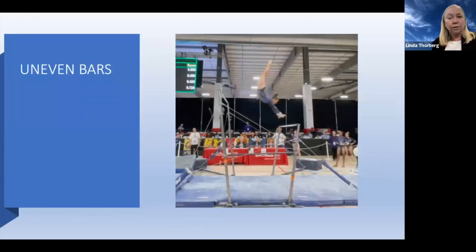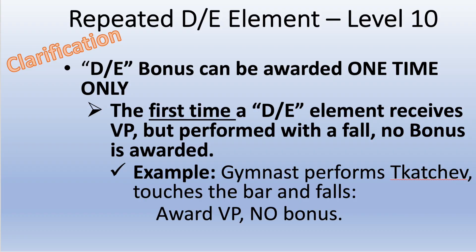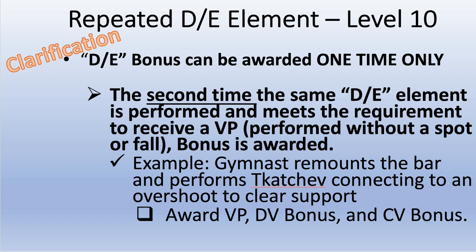Moving on to bars. When gymnasts perform D and E level skills, those are eligible for D or E bonus. However, if the first time she does a D skill she gets the value part — meaning she touched the bar — but then fell, she doesn't get the bonus. She would get credit as one of her release skills counting toward the eight skills required, but no bonus. If she then gets back up, remounts the bar, performs the Tkachev again, and connects it with an overshoot, she would get the bonus the second time since it wasn't awarded the first time, plus the connection bonus for the two skills.